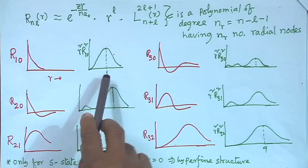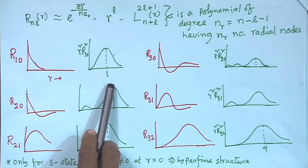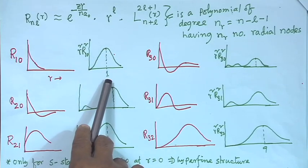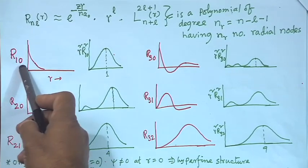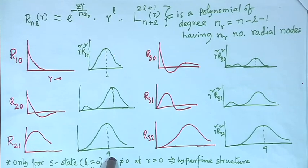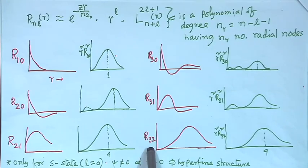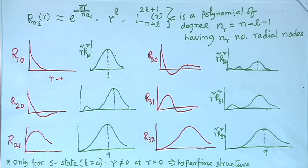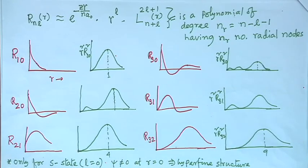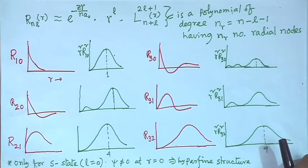Here I have marked this: 1 equals the Bohr radius. For L = n−1, the value 4 means 4a₀ — four times the Bohr radius — and this 9 similarly. These are exactly the Bohr orbit radii obtained from the Bohr model, and from the wave function one can predict the same and of course something more.